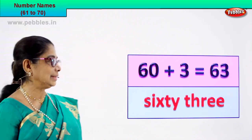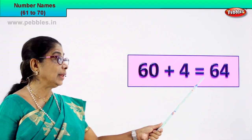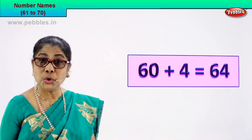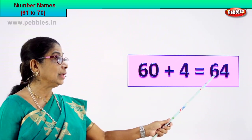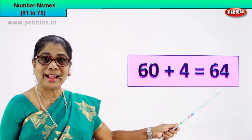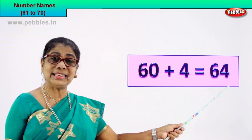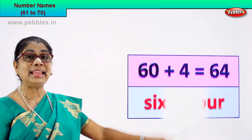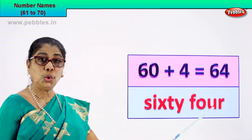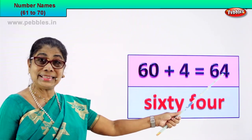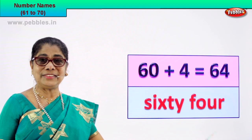Shall we take the next number? Yes! 60 plus 4 is equal to 64. 6 and 4, 64 is the numeral. How do we write the name? You know the spelling of 60, you know the spelling of 4 — it's very easy. S-I-X-T-Y, and F-O-U-R. The numeral is 64 and we write its name as sixty-four. Very good!